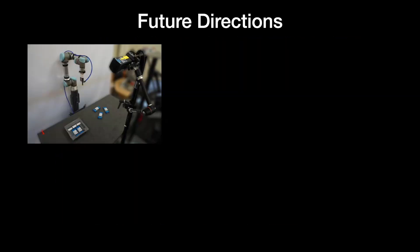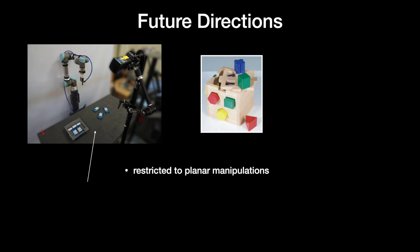While Form2Fit presents a step towards generalizable kit assembly, it does have a few limitations. First, we note that most of our experiments are done on a tabletop setting, where the robot is restricted to planar two-dimensional manipulations. It would be interesting to explore a more complex action representation to enable three-dimensional 6DOF assembly.